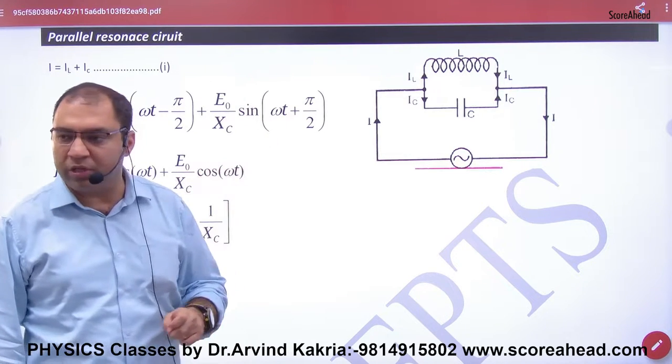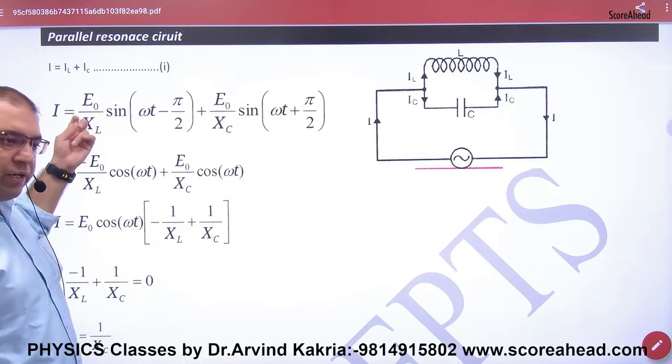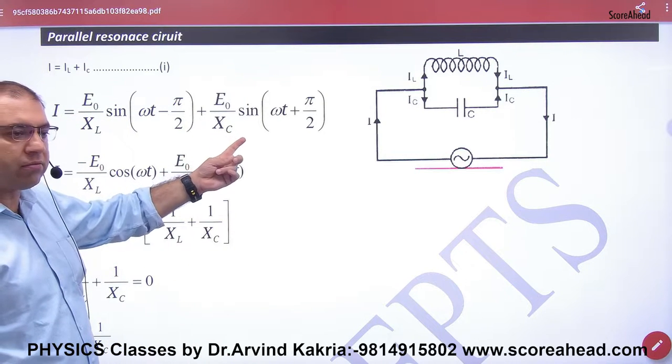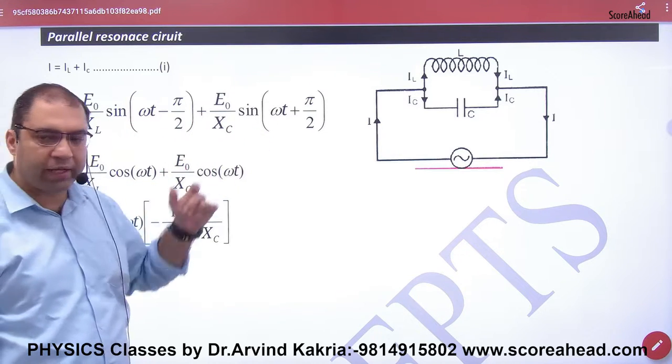And in the capacitor, the current and EMF is above by an angle of π/2. So in the inductor, the maximum current is E₀/XL, and in the capacitor, the maximum current is E₀/XC. So this is minus π/2 and this is plus π/2.